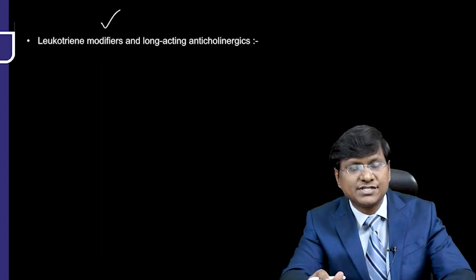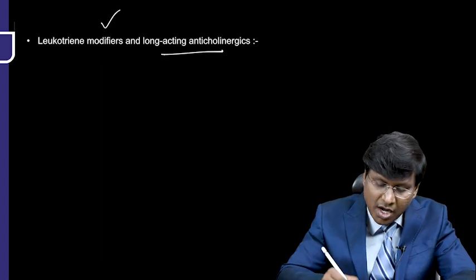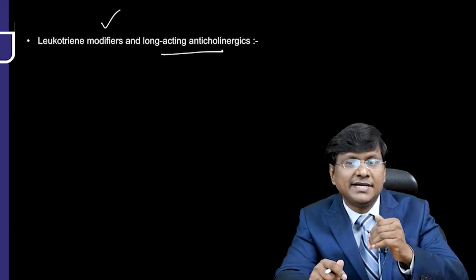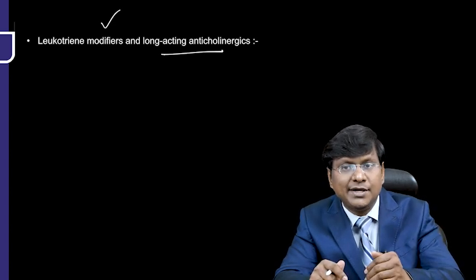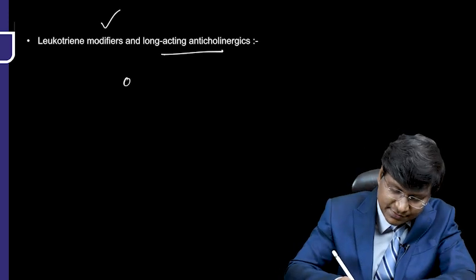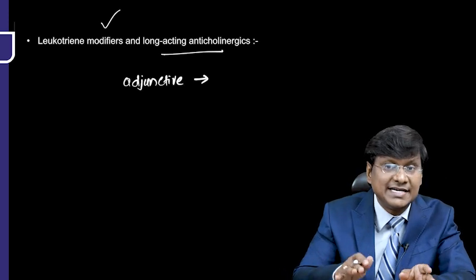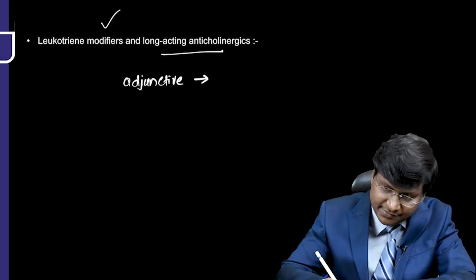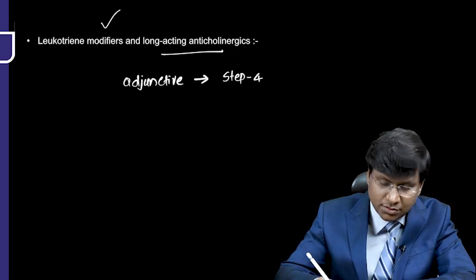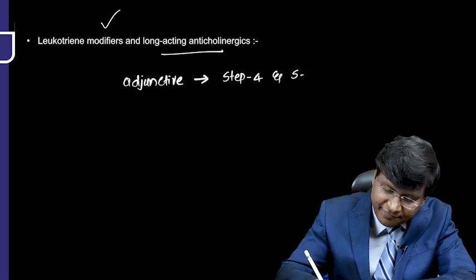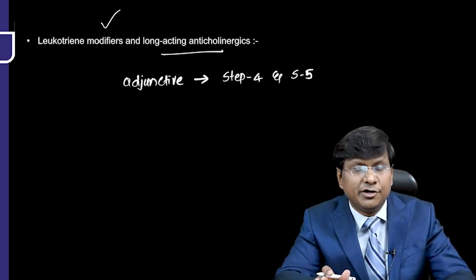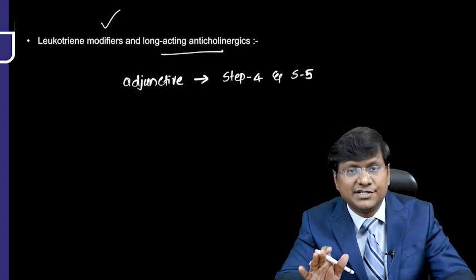Leukotriene modifiers and long-acting anticholinergic drugs can be used as adjunctive therapies in patients requiring Step 4 and Step 5 treatment.